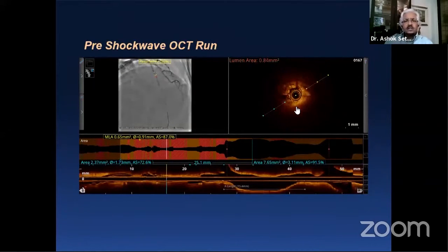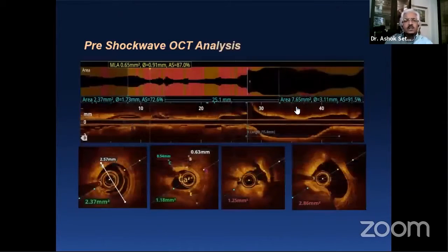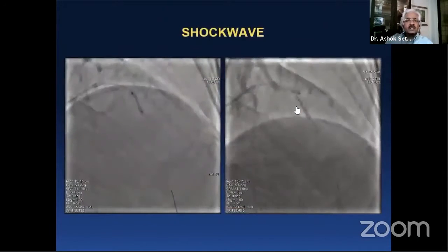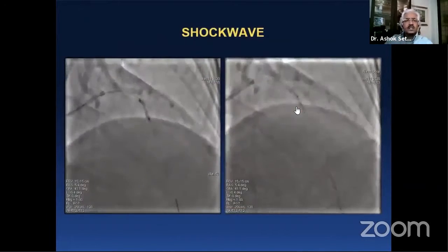We created a pre-analysis of the lesion itself. It was fairly extensive calcification — you can see that at many points it was going up to a millimeter in depth, clearly more than 0.5 millimeters. It was a longish lesion, greater than five millimeters, and it was concentric calcification.